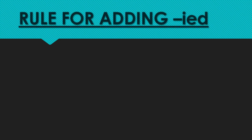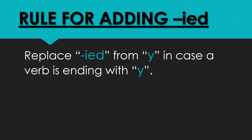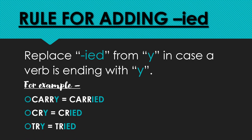There are also a lot of confusions in using '-ied'. Students are confused about where to use '-ied'. You have to replace the Y with '-ied' when the verb is ending with Y. For example: 'carry' becomes 'carried', 'cry' becomes 'cried', and 'try' becomes 'tried' in simple past tense.